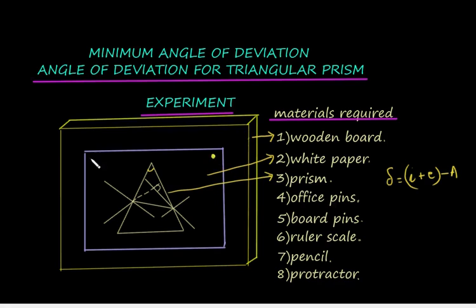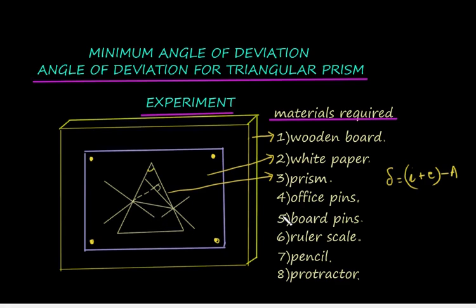The materials also include a ruler, scale, pencil, and a protractor to measure the angles. The white paper is fixed on the board using board pins, and the prism is kept on this paper. Its outline is marked, after which the prism is taken away and then a perpendicular is drawn, which is the normal.